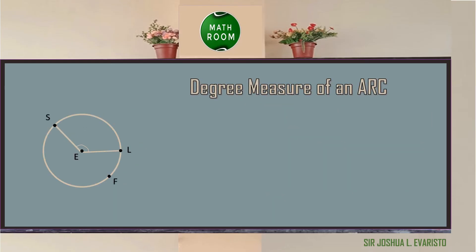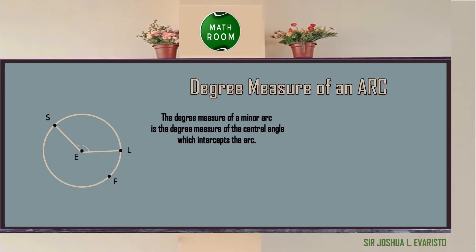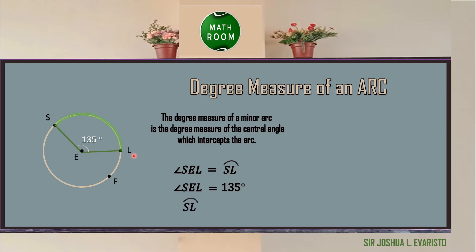Let us now discover the relationship between the central angle and arc. The degree measure of a minor arc is the degree measure of the central angle which intercepts the arc. In the given example, circle E, the central angle is angle SEL, which is equal to the intercepted arc, or the minor arc SL. For example, if the measurement of angle SEL is equal to 135 degrees, therefore the measurement of arc SL is also equal to 135 degrees.